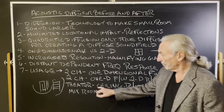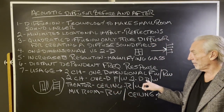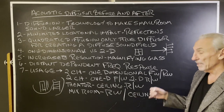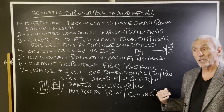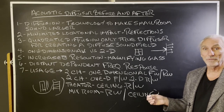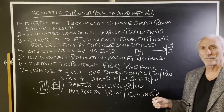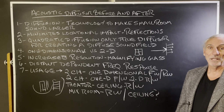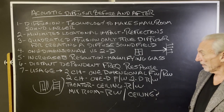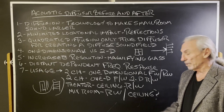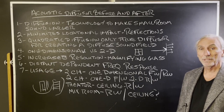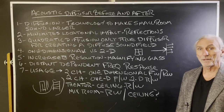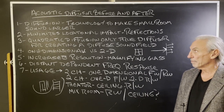For two-channel setups, use one-dimensional diffusion on the front and rear walls, or two-dimensional on the rear wall if distances are smaller. For home theater, we like diffusion on the ceiling and the rear wall — some people put it on the front wall too, though space is limited up front with the screen, speakers, and equipment. For a mix room, rear wall and sometimes ceiling diffusion works well, since mix engineers don't want slap back from the rear wall getting into their mix.